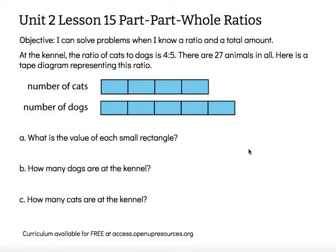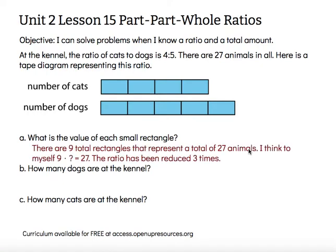What is the value of each small rectangle? There are 9 rectangles total, and those 9 rectangles represent all the animals at the shelter. There are 27 animals at the shelter, so we must have reduced this ratio and grouped them in smaller groups. So 9 times what gives me 27? The ratio has been reduced 3 times, so each one of those rectangles represents 3 animals.